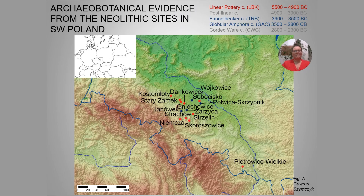Botanical data from the Neolithic in southwestern Poland are very scarce. These are almost exclusively imprints of plants on daub and at the bottoms of vessels, as well as charred remains of plants, usually grains. This is due to the conditions of deposition in this part of Poland, which make it impossible for organic matter, including plants and bones, to survive. The map shows the number of sites where such remains have been examined, and we can see there are very few from the phase of 3,000 years.